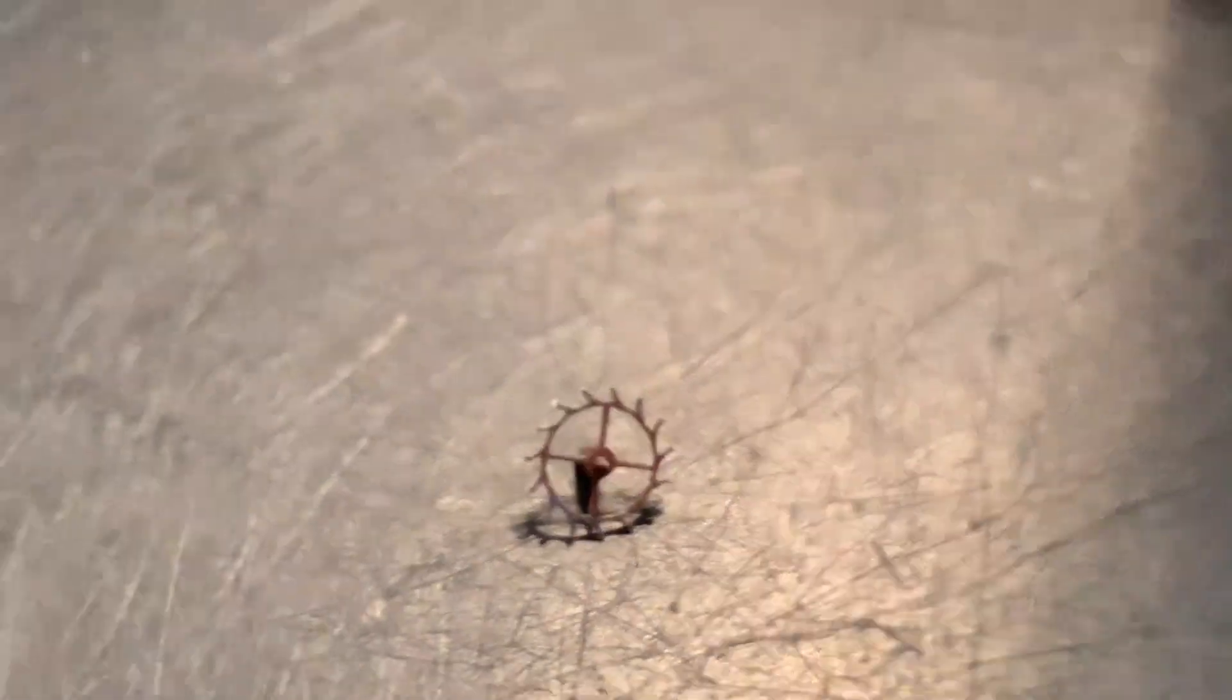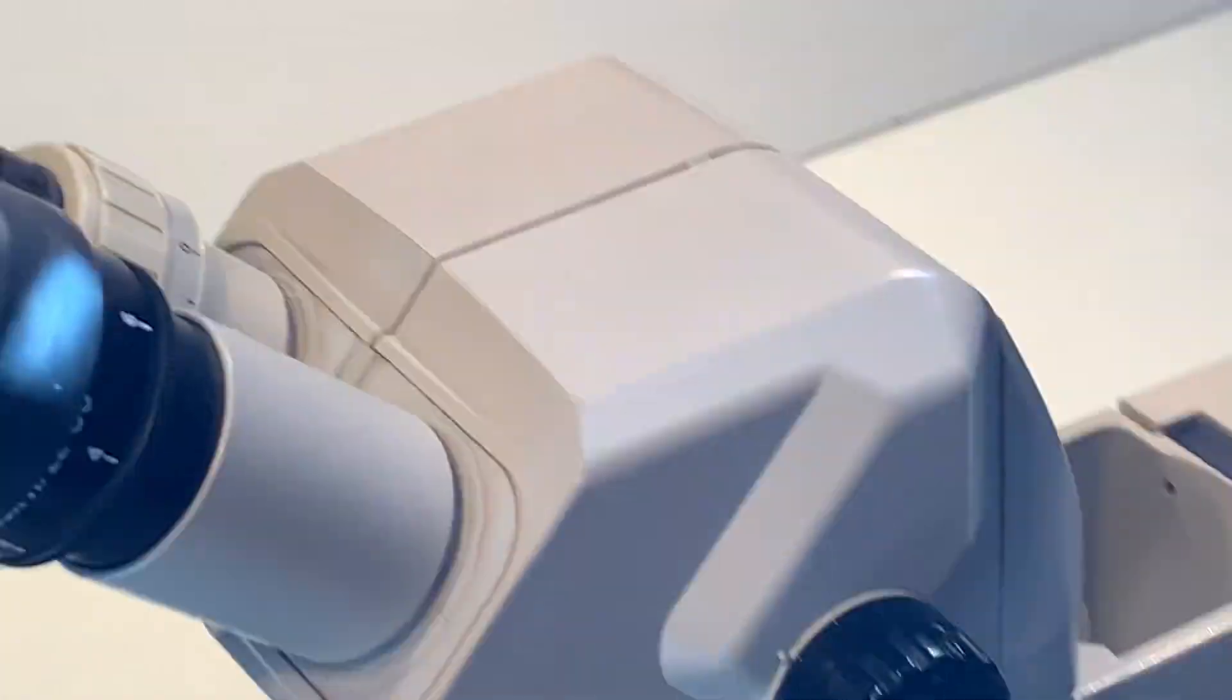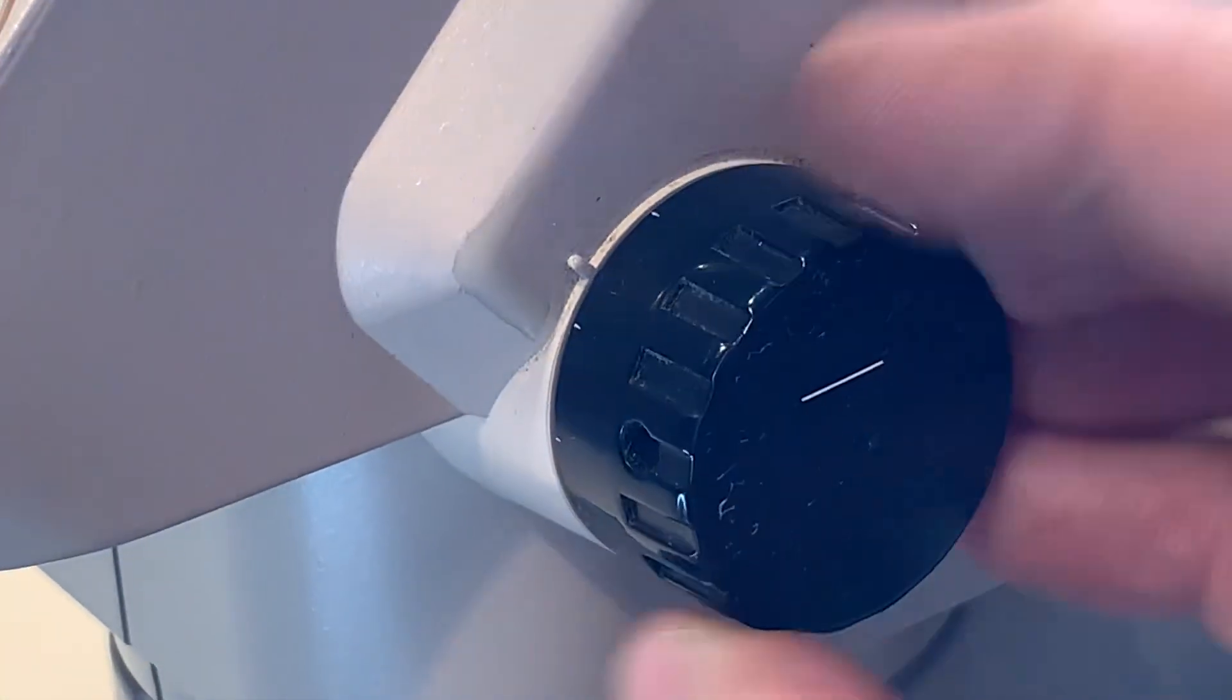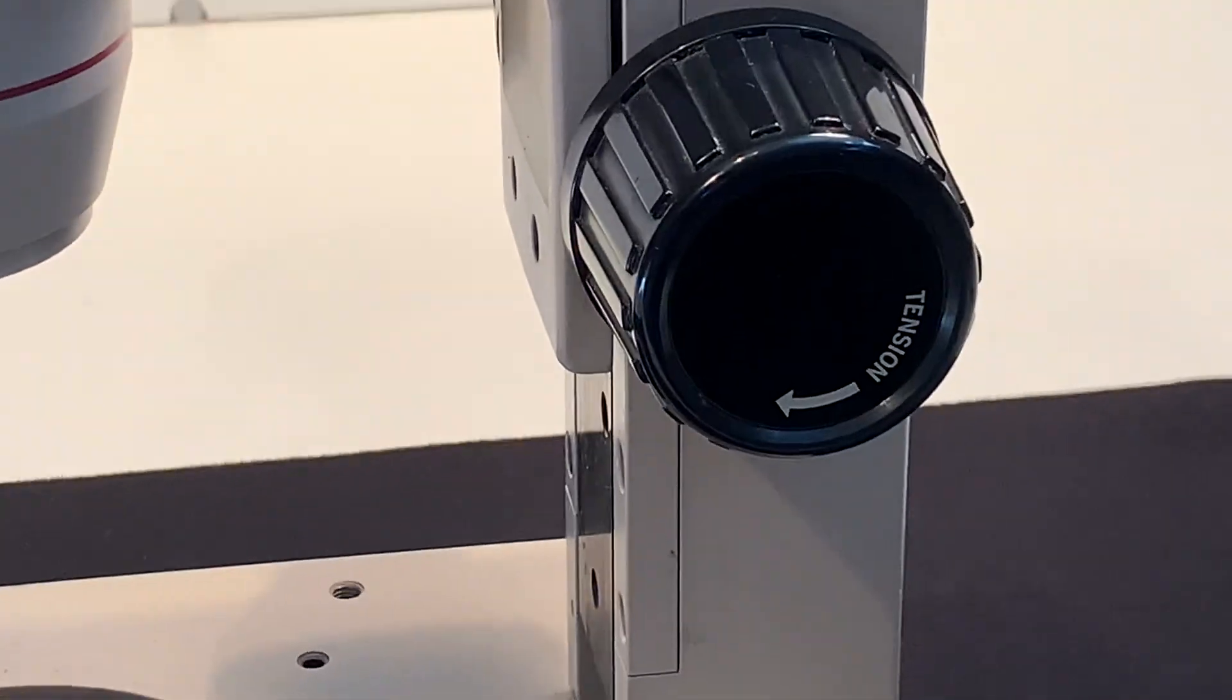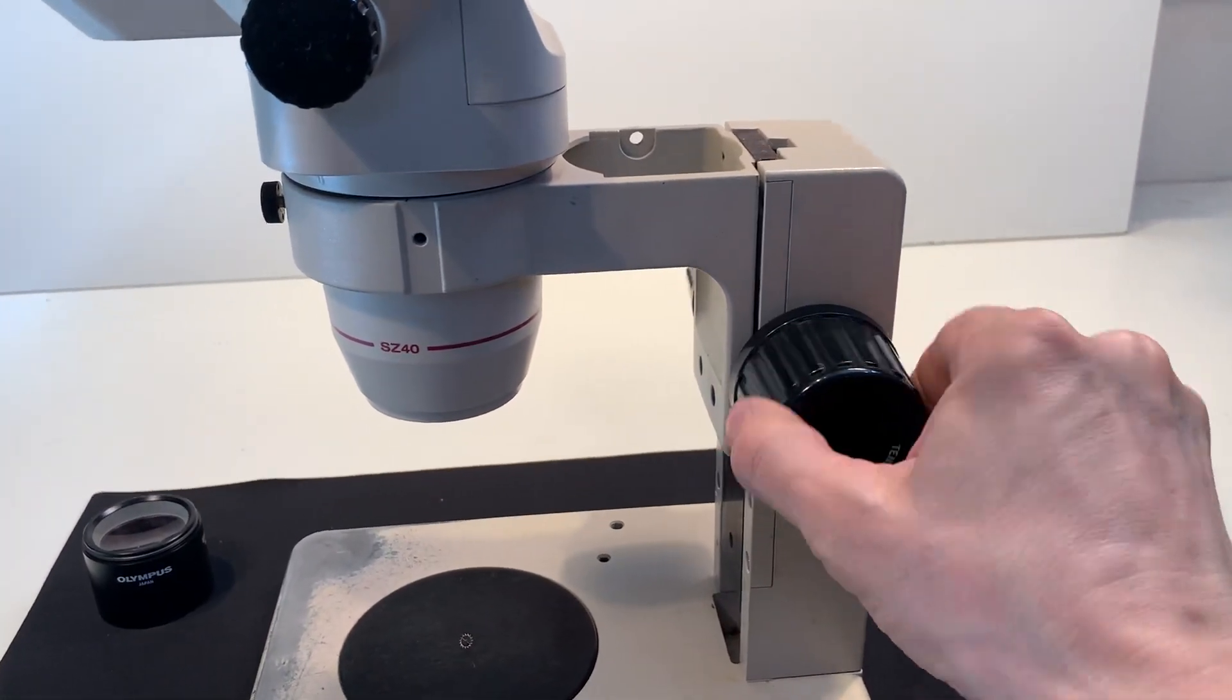So here there's a small gear wheel under the microscope. This is the zoom button. This is the height adjustment. Here's the height adjustment for the stand.